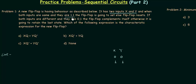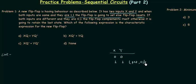When x and y are both 1, the flip-flop is going to set, which means the output is equal to 1. When both are 0, the flip-flop is going to reset, meaning the output is going to be 0.